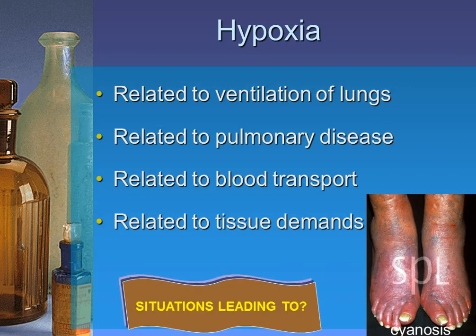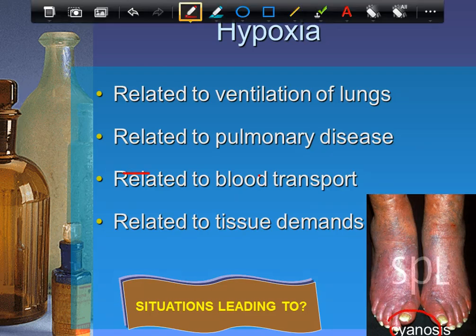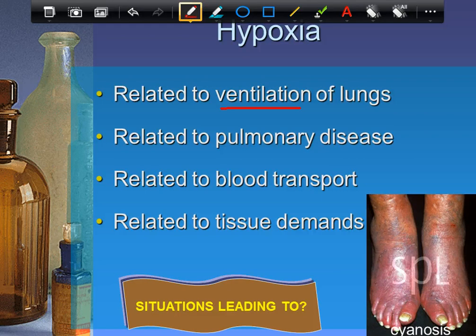First hypoxia source: a ventilation problem. For example, if you're in an earthquake and a cement block falls on your upper body — you're alive but can't expand your lungs. If you can't expand your lungs to increase thoracic cavity size, you can't drop the pressure (Boyle's law), so air won't come in. This is a ventilation problem — a problem with air coming in and out.